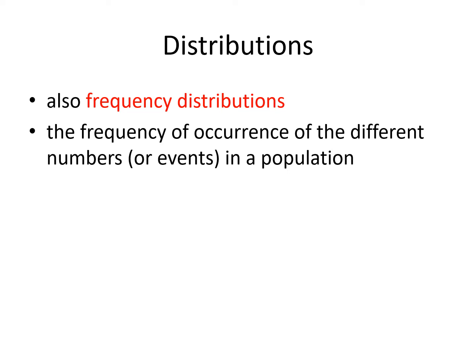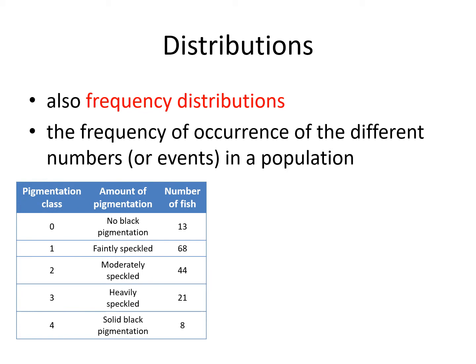Let us first talk about key points about distributions, which we've already touched on in earlier lectures. Distributions or frequency distributions are the frequency of occurrences of different numbers or events in a population. Consider, for example, the following data on pigmentation in a certain fish species. The amount of pigmentation is represented by five classes, where zero corresponds to no black pigmentation, and four refers to solid black pigmentation. Under each class are the number of fish with the corresponding type or degree of pigmentation.